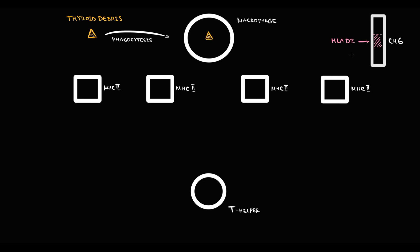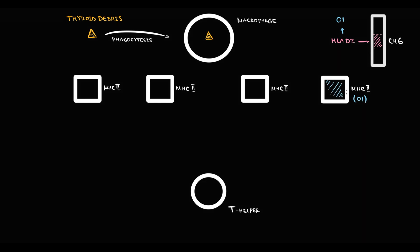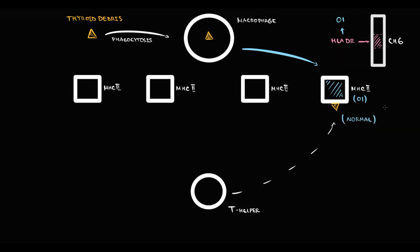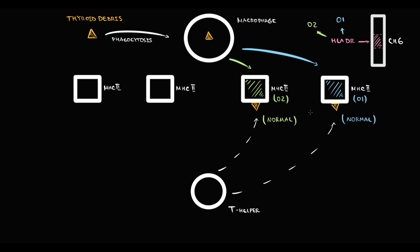For example, a person with the HLA-DR1 allele will have an MHC2 receptor made from HLA-DR1 genetic information, which presents thyroid debris in a perfectly normal way — T-helpers recognize it as a normal substance and see no danger. Similarly, if a person has the HLA-DR2 allele, that MHC2 receptor also presents thyroid debris normally, and there will be no inflammatory response.